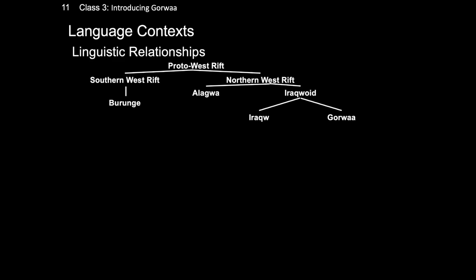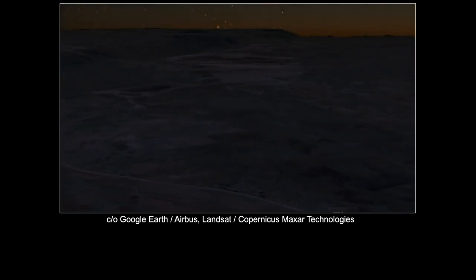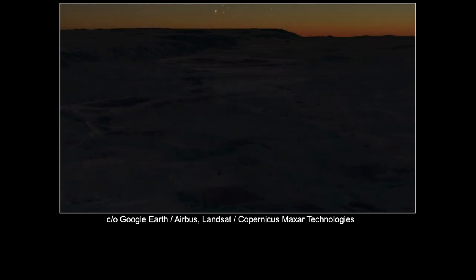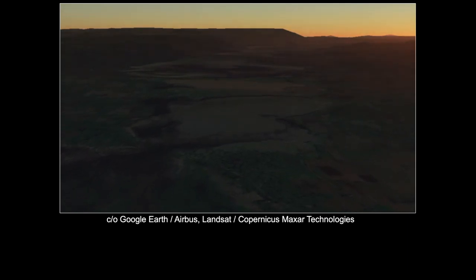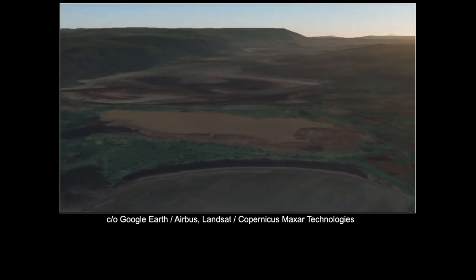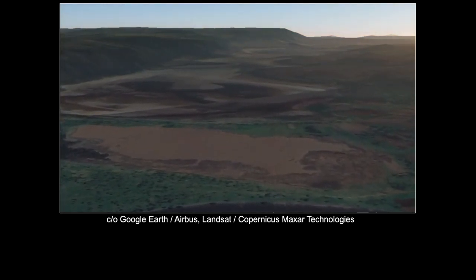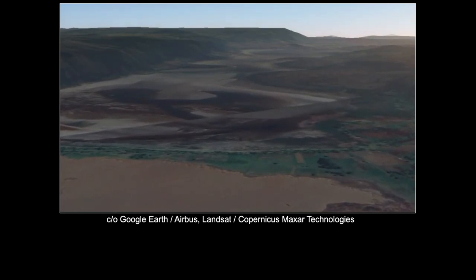Comparing some words across South Cushitic as well as their reconstructed proto-forms in proto-west rift, we can see resemblances across all of the languages. The relationships which Gorwa exhibits are not, however, simply those of shared lineage. The larger area in which Gorwa is spoken, the Tanzanian Rift Valley area, has been witness to the movement of humans for a very long time. It is the only place on the African continent in which all four of Greenberg's African language phyla are in contact, and have been in contact for a long time.